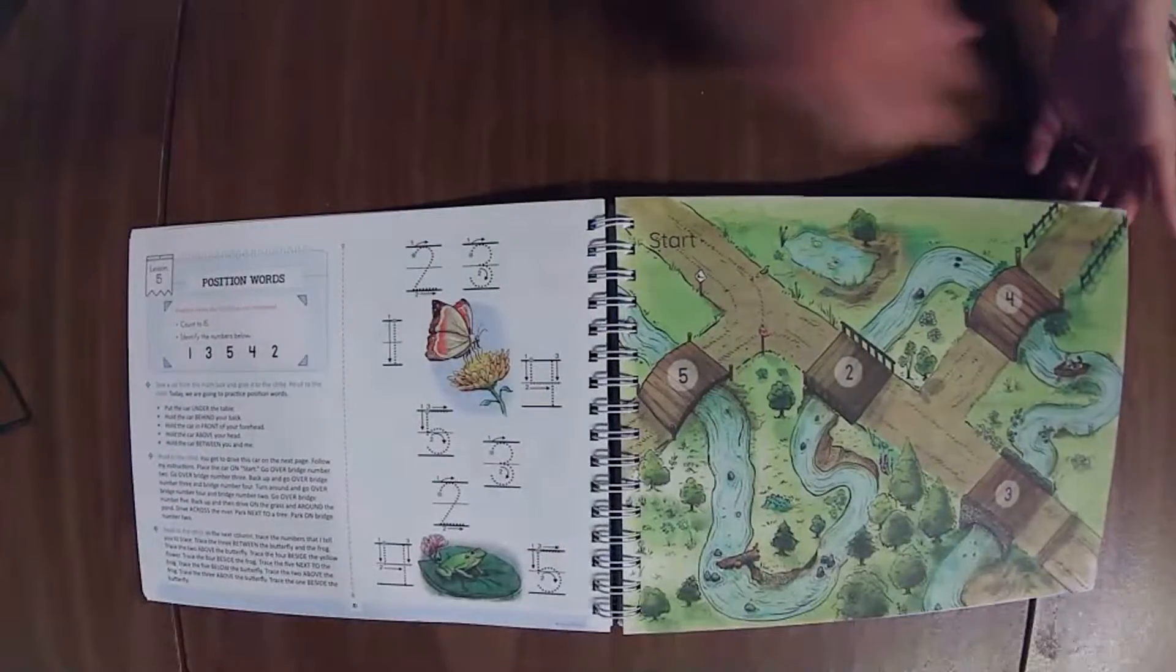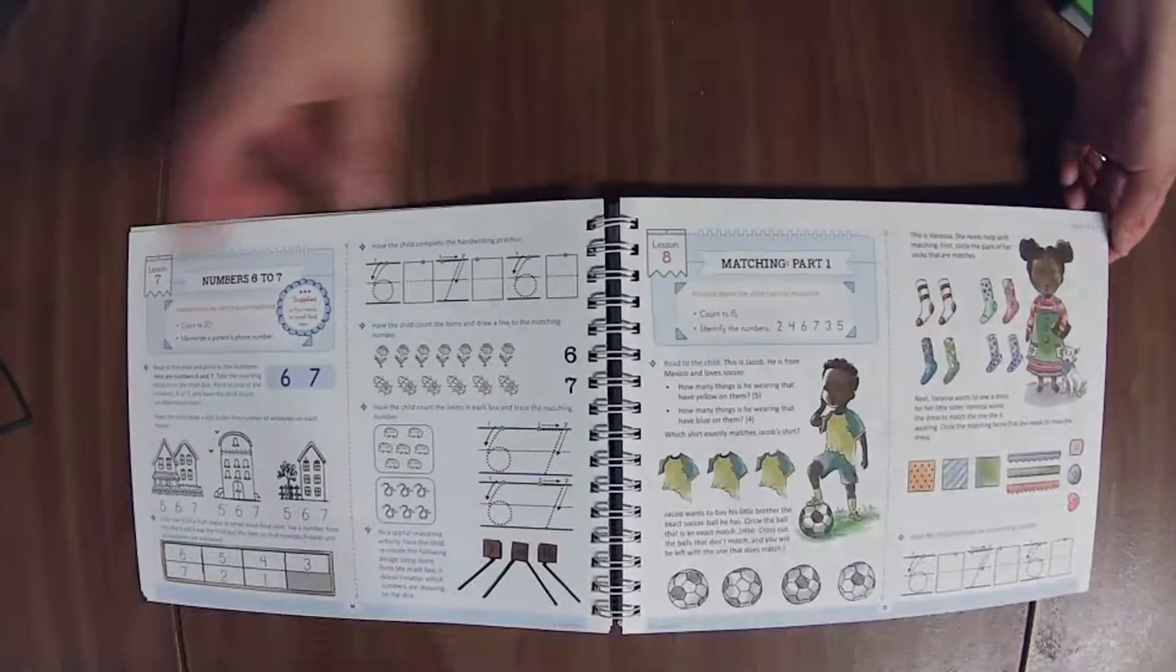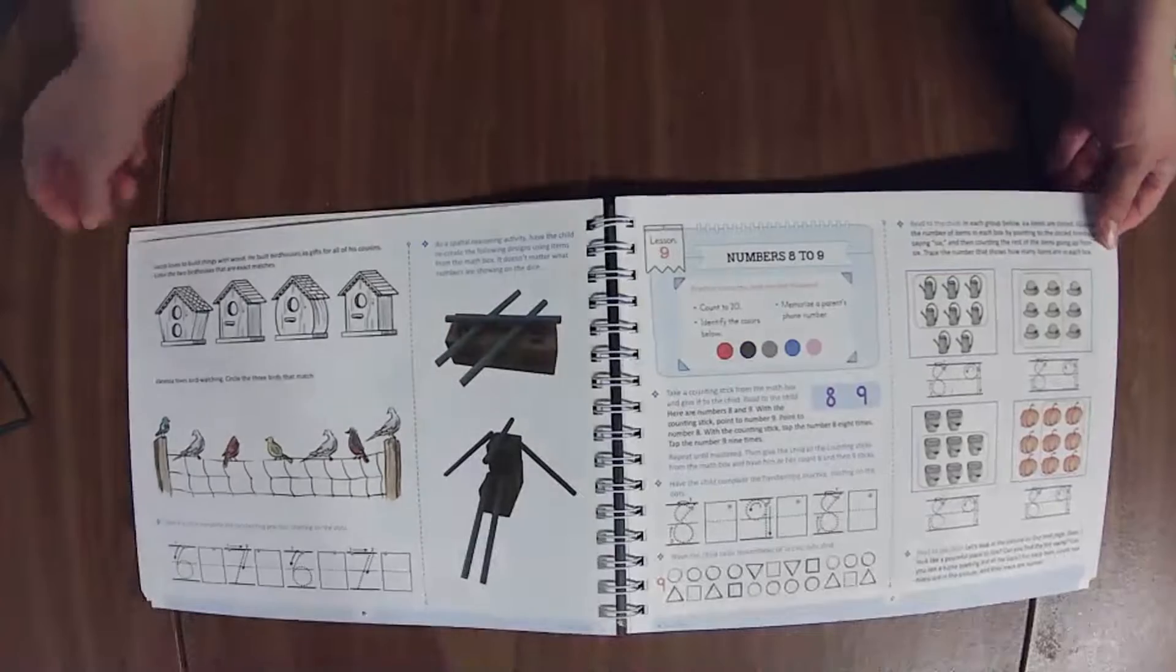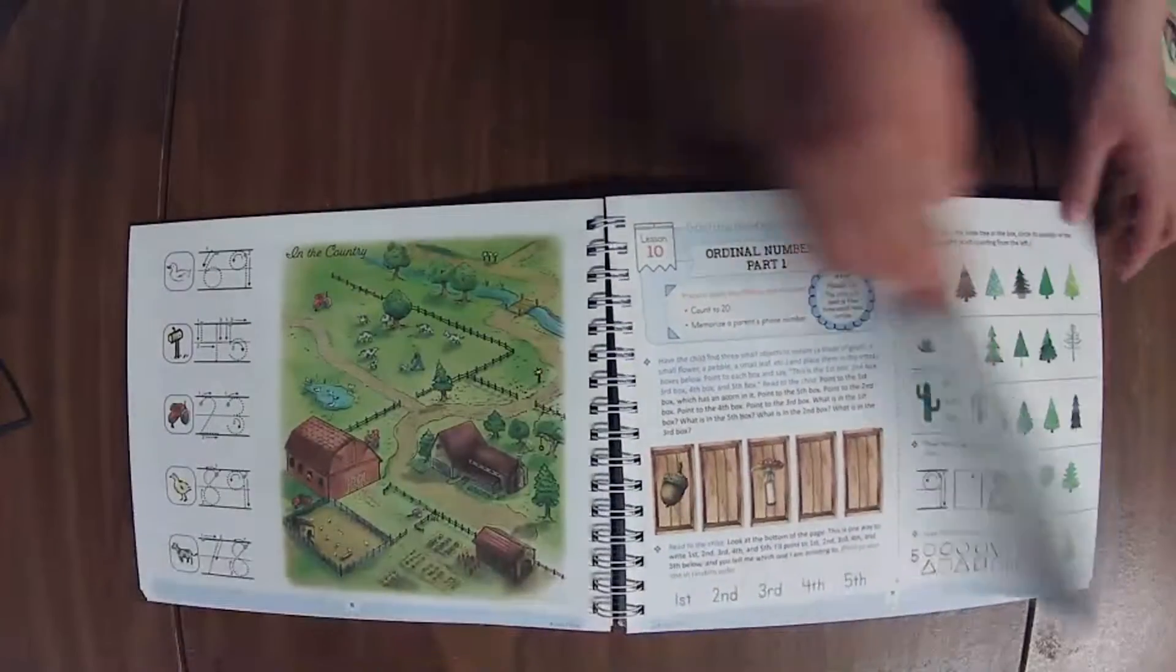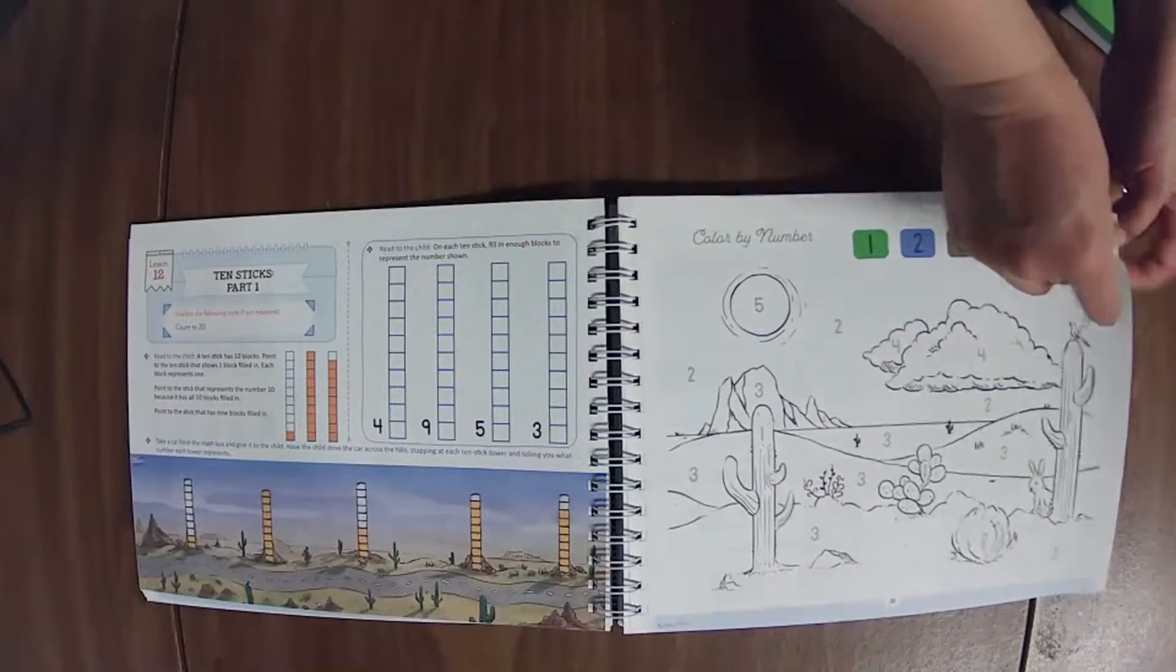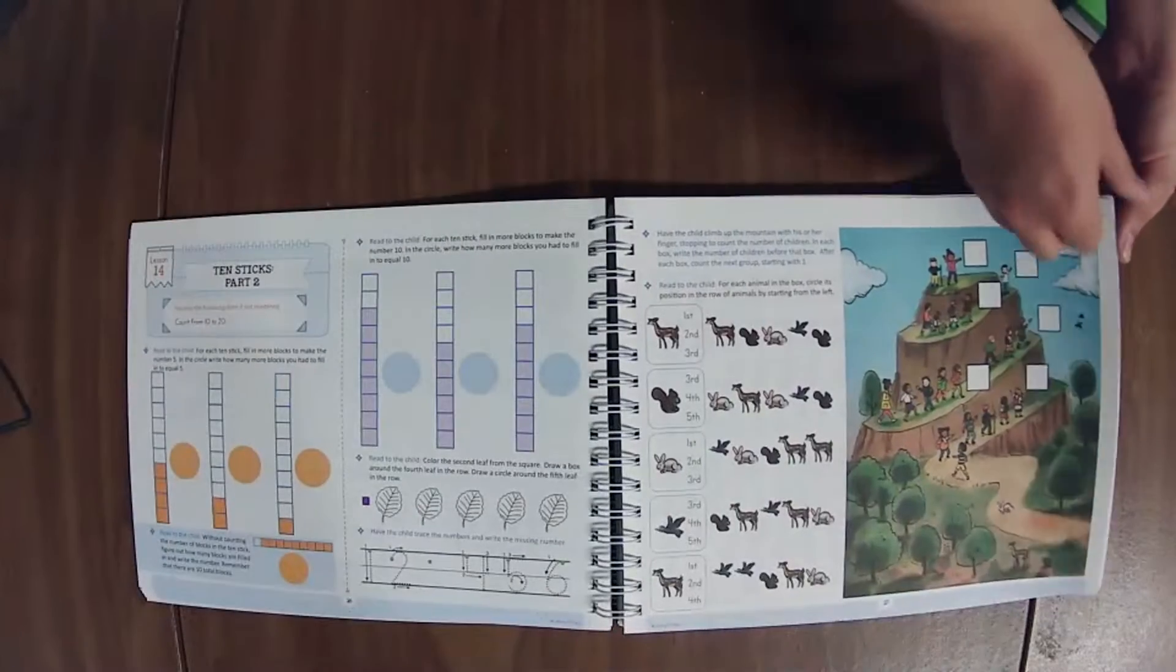I just got done doing a live of the handwriting level K, so if you want to check that out it will be in the description box as soon as I'm done doing all the lives or you can find it on my channel. I also have a flip through of The Good and the Beautiful's language arts level K on my channel that is already linked in the description box. I've also linked this curriculum if you want to grab it.